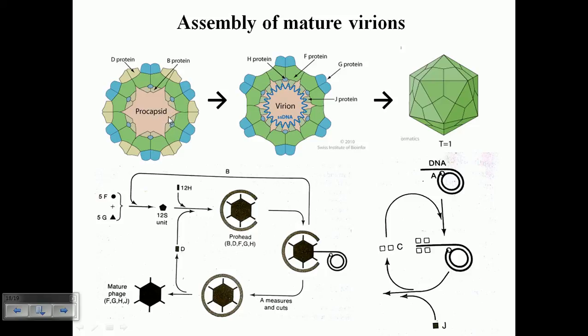We use this assembled phage, they are ready to infect another host cell. You can see here the G proteins and F proteins coming and they produce a 12S unit of F and G proteins. Then they add the H protein and after that they produce a prohead. Once the insertion of DNA is completed they will produce a mature phage.